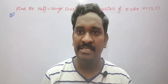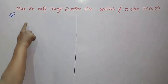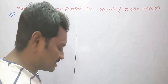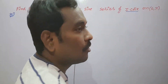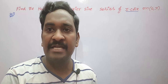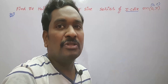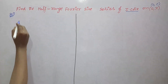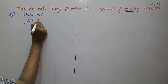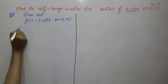Hi everyone, welcome back to our channel. In this video I would like to explain an example on half-range sine series. The statement of the problem: find the half-range Fourier sine series of the function x·cos(x). The given function is x·cos(x) defined on the open interval (0, π). In half-range sine or cosine series, the interval should be in the form of (0, π) or (0, c).